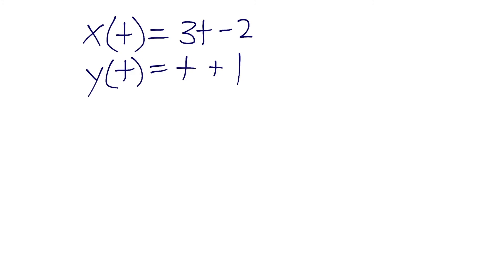So I'm going to solve for t within the x equation, and just bring this down here. And we'll have x equals 3t minus 2. Let's solve for t now. We can do x plus 2 equals 3t. Divide by 3 on both sides. t equals x plus 2 over 3.